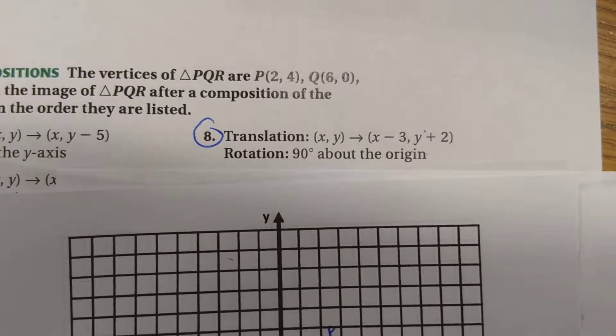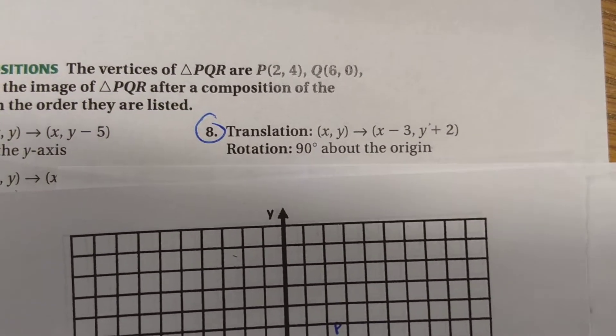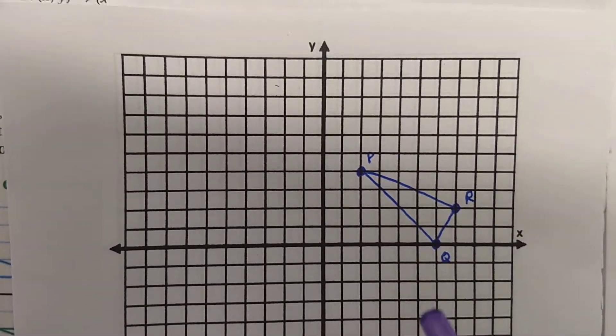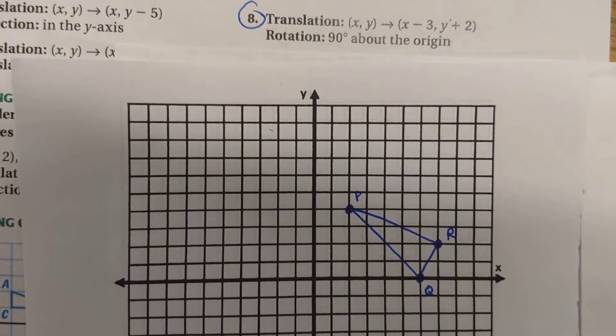Number 8 here is an example of a composition that we can graph. We're taking a triangle, PQR, which I've drawn already below. We're going to take that through two different transformations.